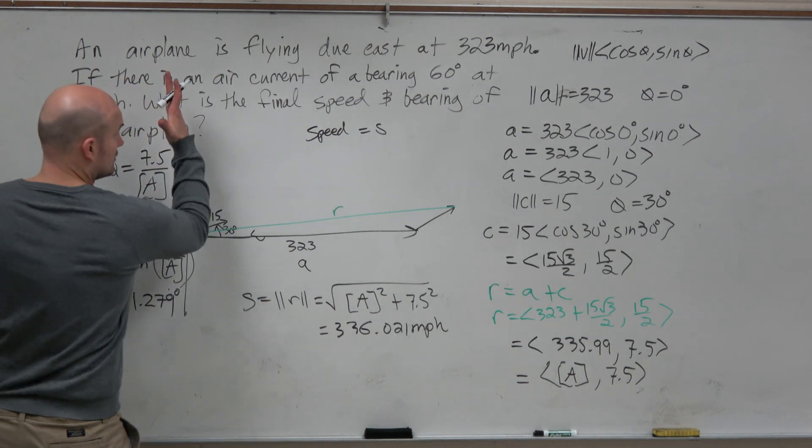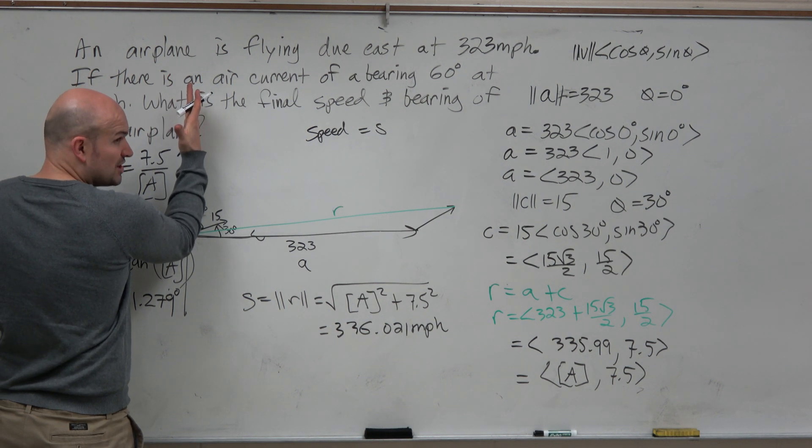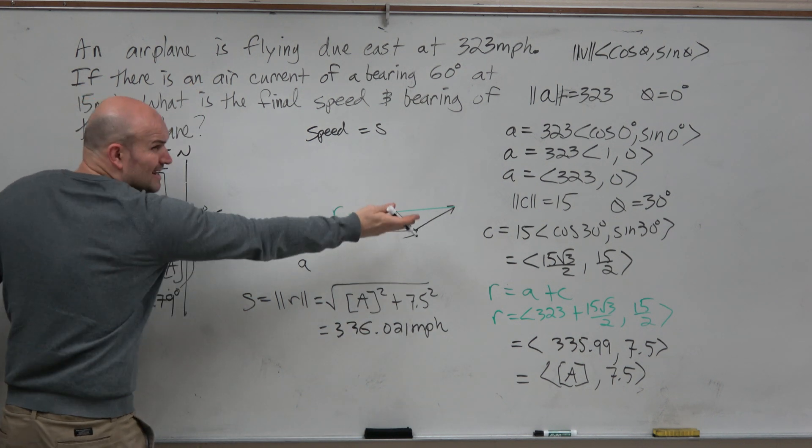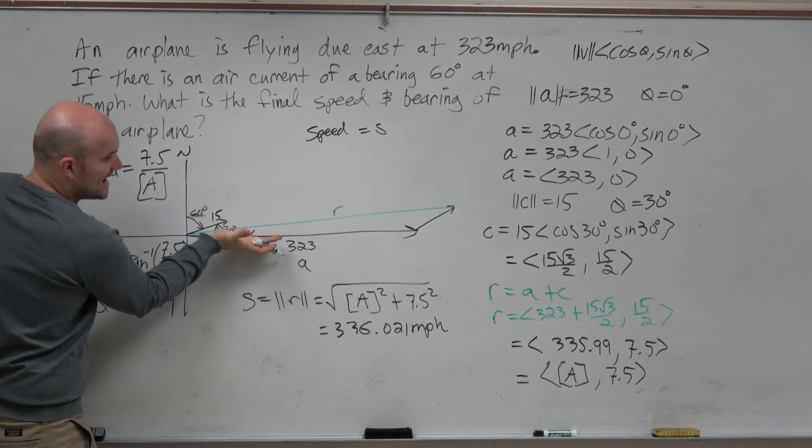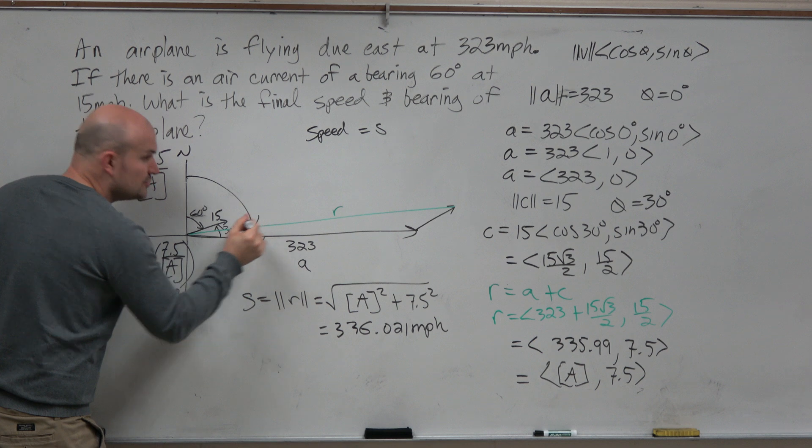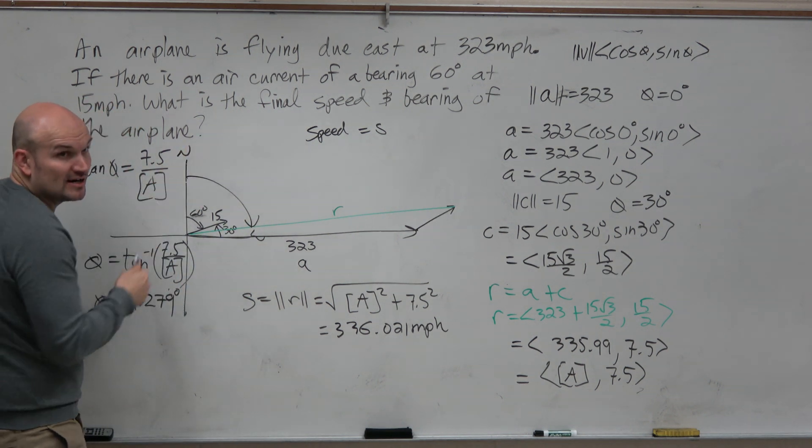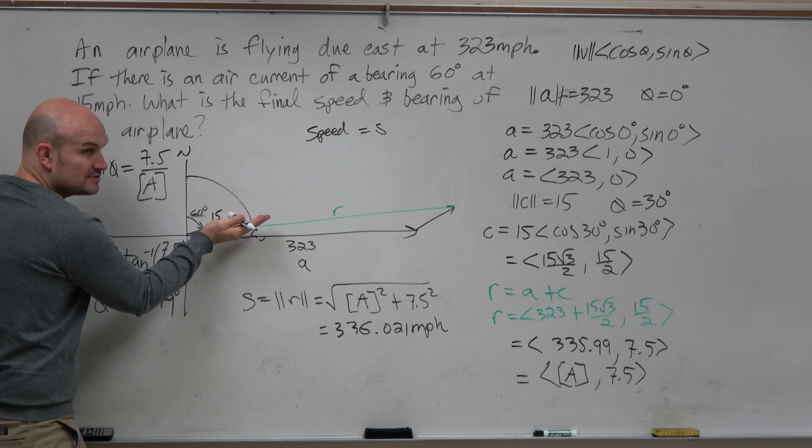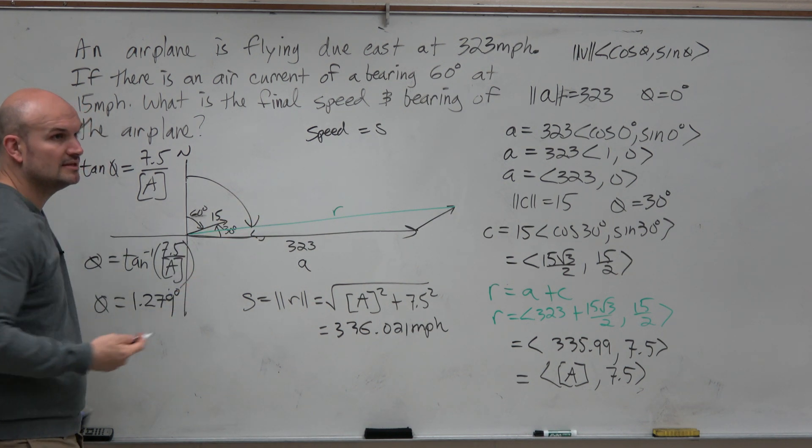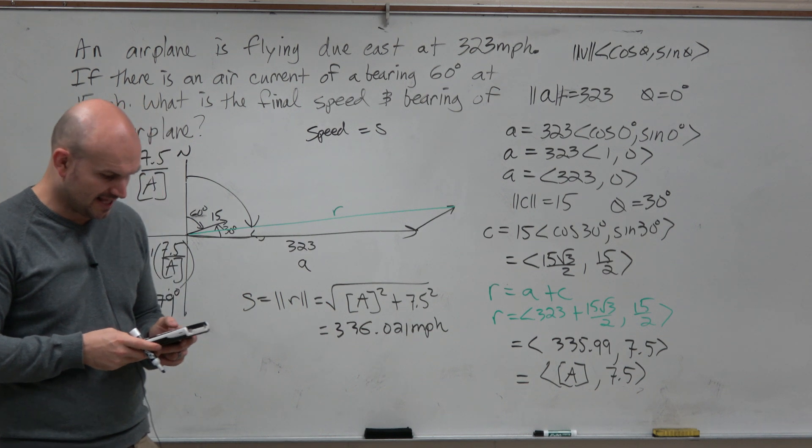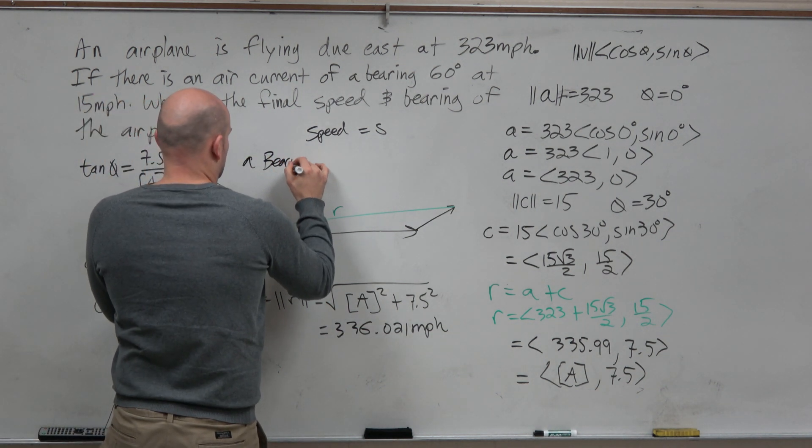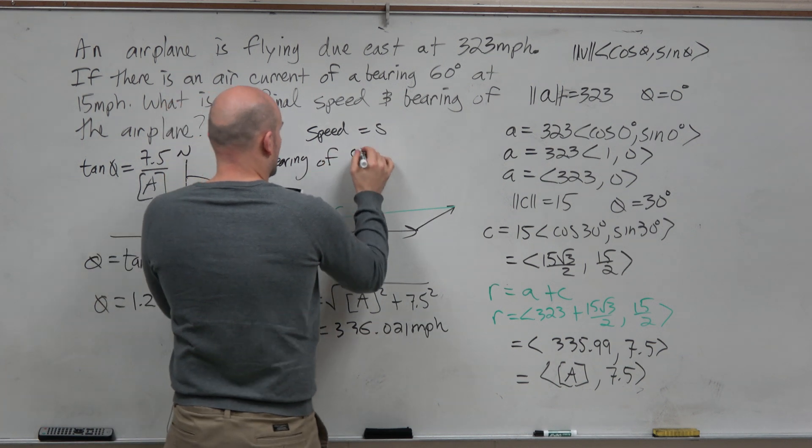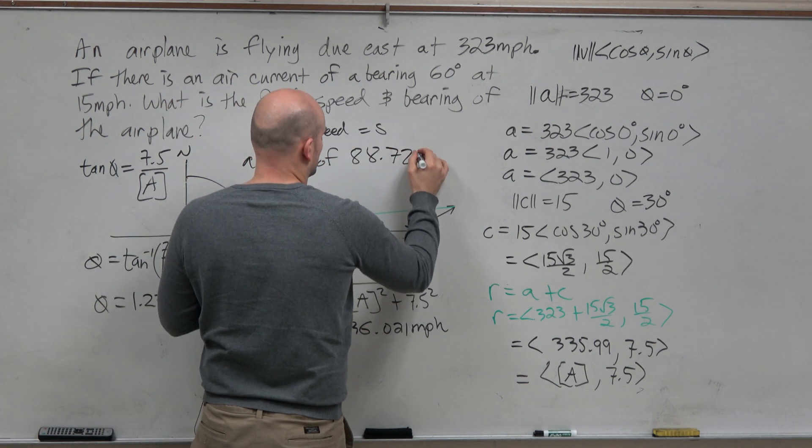So is that my bearing? Well, bearings are from due north. 1.27 degrees. Is that where the plane's going? No. The plane's over here. So that is the angle in standard form. I need to figure out the angle from due north. It asked for the bearing. It didn't ask for the angle in standard form. So therefore, if this from here is 1.27, I just got to subtract that from 90 to get my angle. So I just do 90 minus that last answer. And I say a bearing of 88.721 degrees. Or you could round that to the whole.